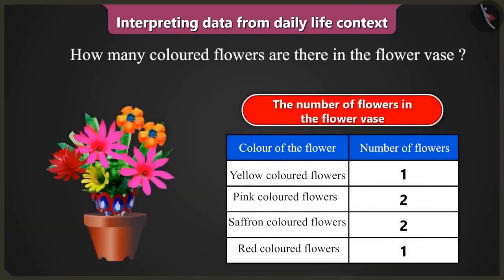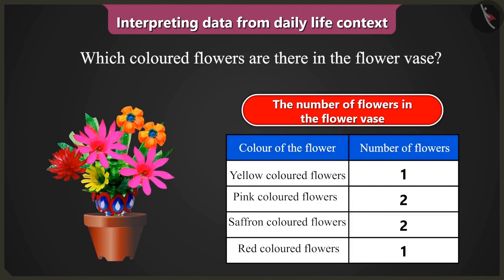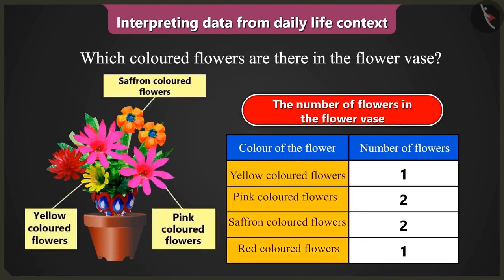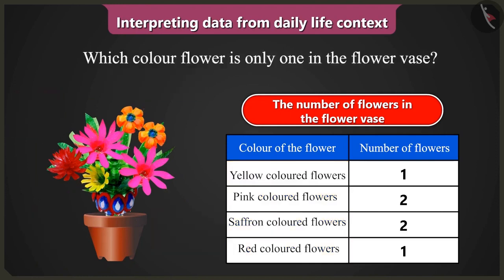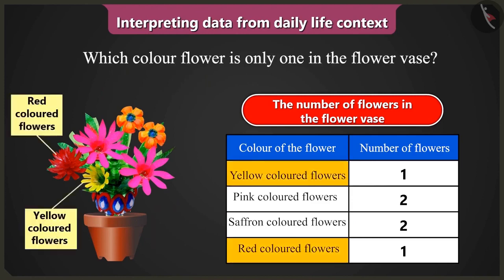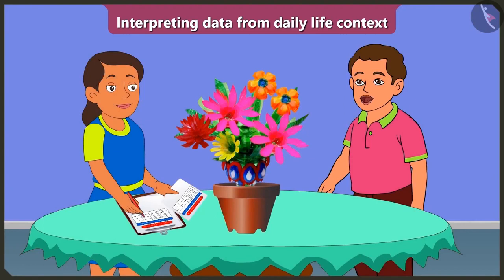So tell me how many colored flowers are there? The table has data about flowers of four colors. Which colored flowers are there? There are yellow, pink, saffron, and red colored flowers. Which color flower is only one? Yellow and red colored flowers are one each. How many pink colored flowers are there? There are two pink colored flowers.